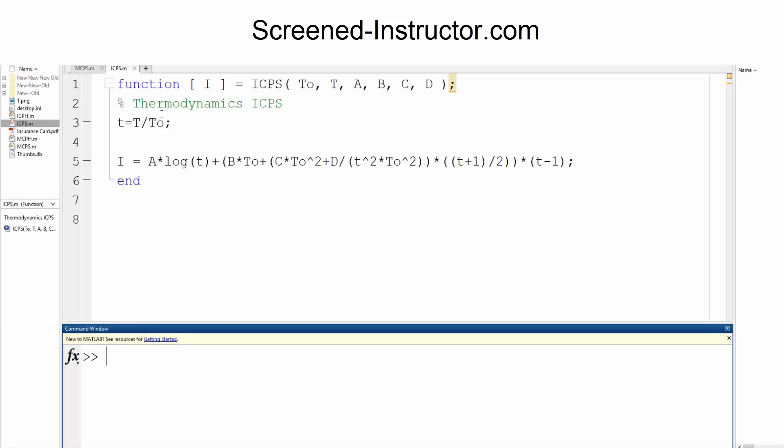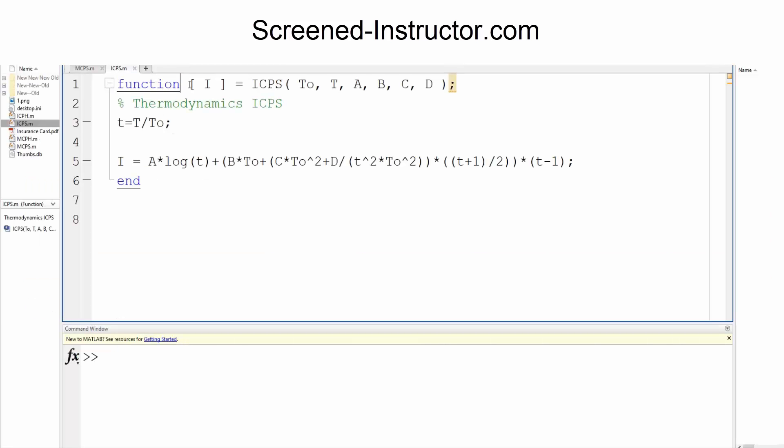And so here, I write down function, I do a space, I do a square bracket, I put i is equal to, now the function name, we put icps. With icps, there are a few variables. We have t0, we have t, a, b, c, and d.